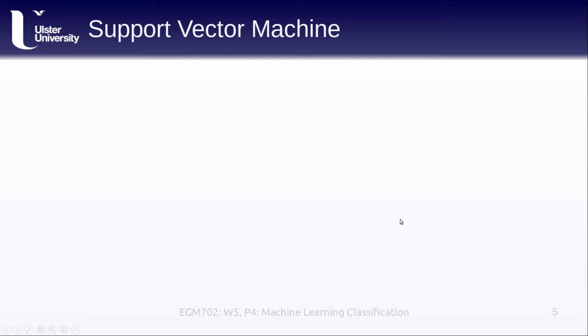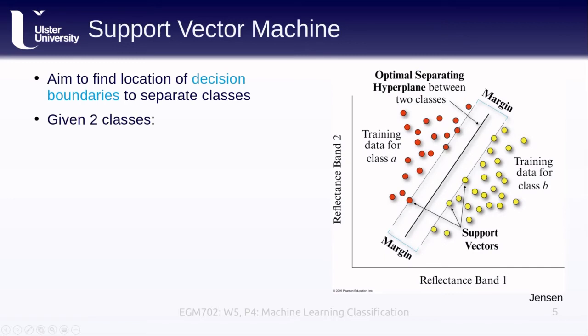Another type of machine learning classification that's quite popular in different remote sensing applications is a support vector machine. The aim here is to find the location of the decision boundary to separate different classes. If we're given two different classes,